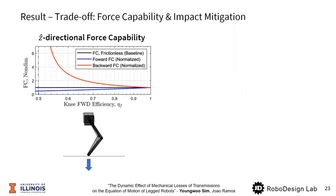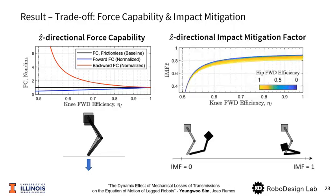However, there's a trade-off. We're sacrificing backdrivability. Take a look at the impact mitigation factor on the right. Remember that impact mitigation factor near 1 means the system is backdrivable. The impact mitigation factor decreases as the transmission efficiency decreases. These results convey an important trade-off in the design of Humanoid. Lower efficiency means more payload, but low backdrivability, and vice versa.